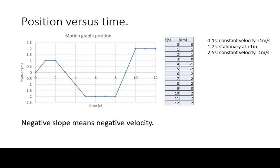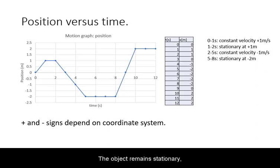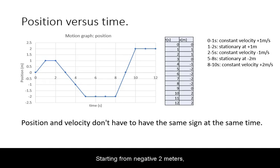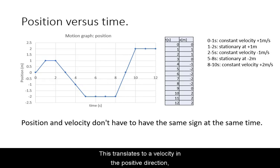From 2 to 5 seconds, the object is moving with a constant velocity of negative 1 meter per second. The object remains stationary at negative 2 meters between 5 and 8 seconds. Starting from negative 2 meters, the object will end up at positive 2 meters in the time interval of 8 to 10 seconds. This translates to a velocity in the positive direction of 2 meters per second.